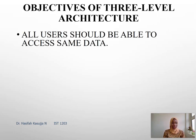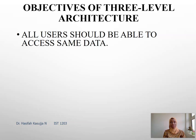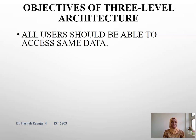The objectives of the three levels of ANSI: objective number one is that all users should be able to access the same data. Because the database is a central repository of data, all users within the organization should be accessing the same data. If there are any changes made to the database, these changes have to be reflected in all places such that people are viewing and accessing updated data.